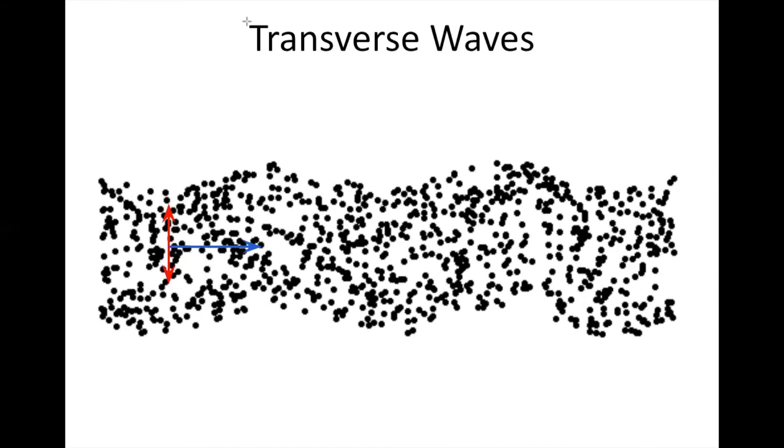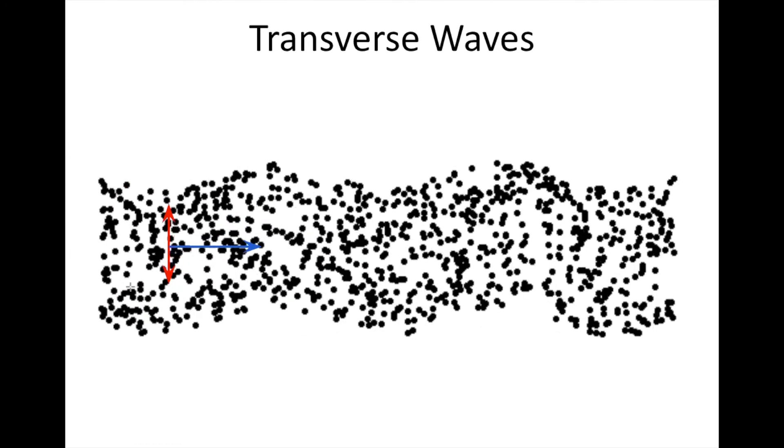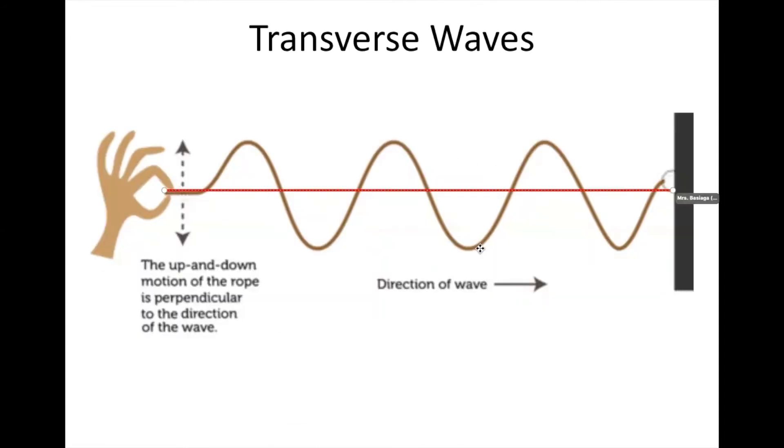You can remember that transverse waves are perpendicular because the capital T in transverse has the perpendicular symbol right in it. To start off, a transverse wave has an equilibrium position, the point around which everything oscillates. The equilibrium position is right in the middle.